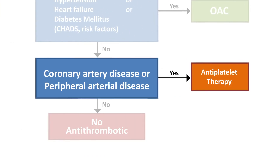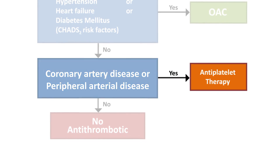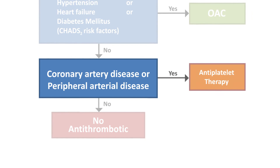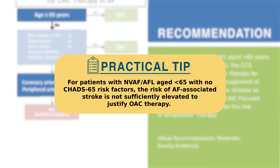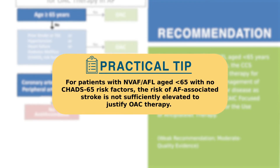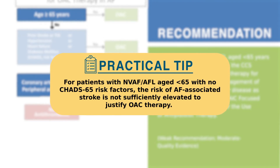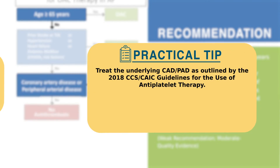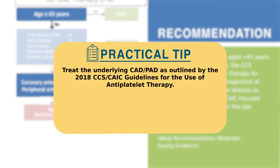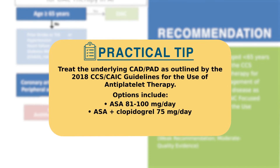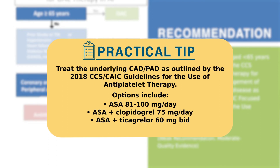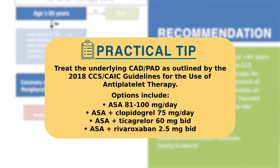If a patient has none of the age or traditional CHADS-2 criteria, and their sole risk factor is vascular disease — either coronary disease or peripheral arterial disease — then only antiplatelet therapy is needed, with management of their coronary or arterial vascular disease as directed by the 2018 CCS and CAIC antiplatelet therapy guidelines. For patients with non-valvular AF or flutter aged less than 65 years with no CHADS-2 risk factors, the risk of stroke associated with AF is not sufficiently elevated to justify OAC therapy. Therapeutic options include ASA 81–100 mg daily alone, or ASA plus either clopidogrel 75 mg daily, ticagrelor 60 mg twice daily, or rivaroxaban 2.5 mg twice daily.